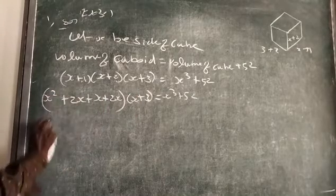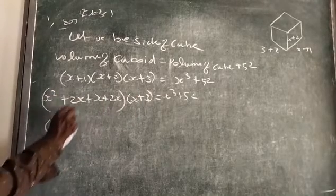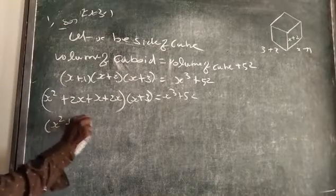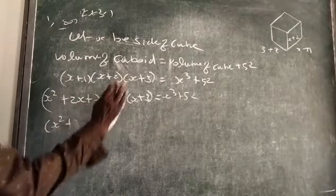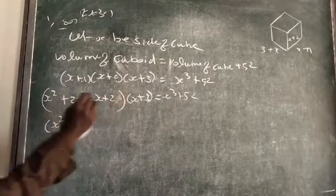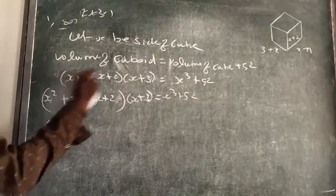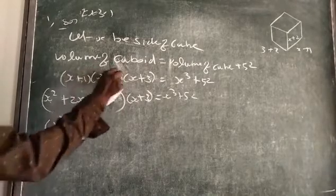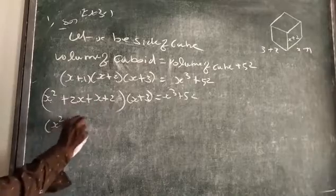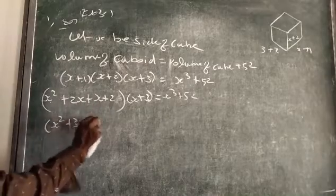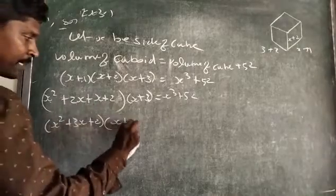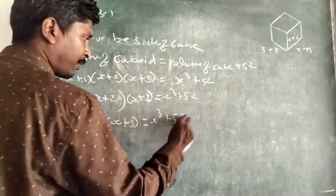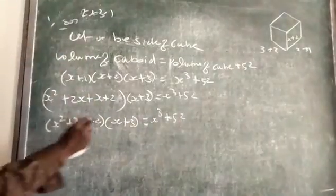We want to add: 2x plus x becomes 3x. So (x+1)(x+2) = x² + 3x + 2. Now we have to multiply this result by (x+3), then set it equal to x³ + 52.